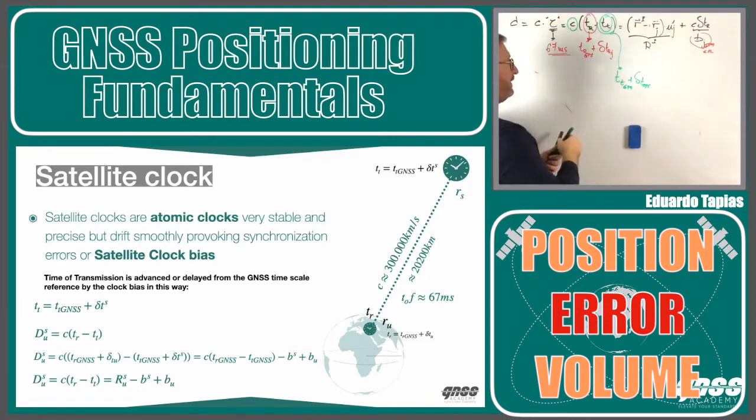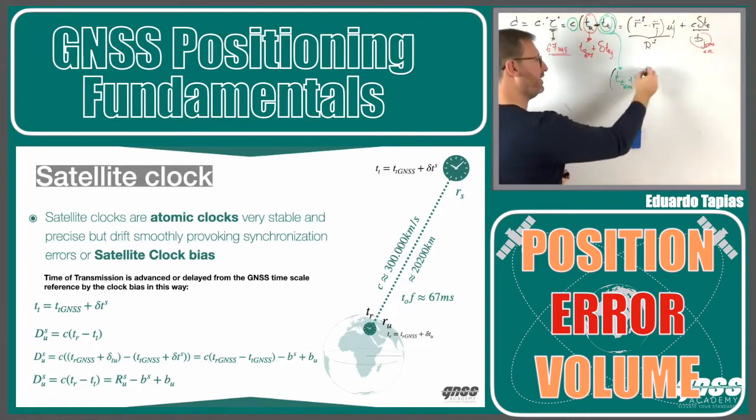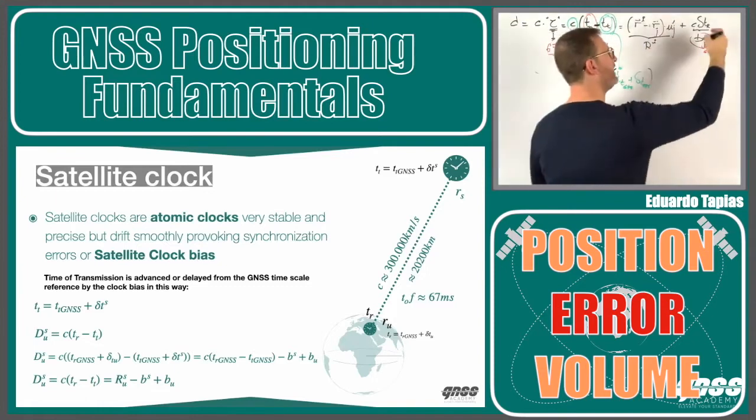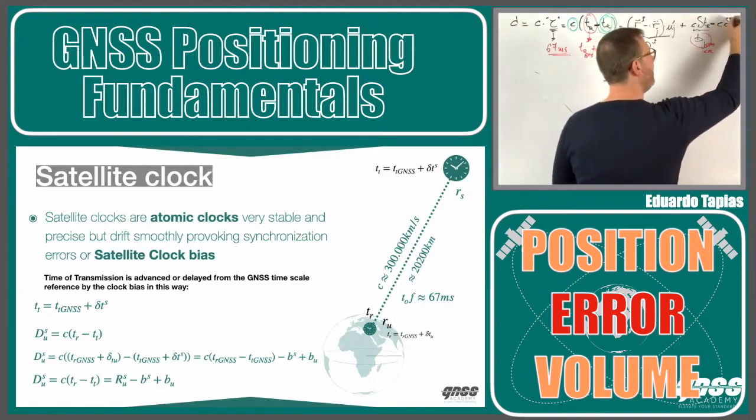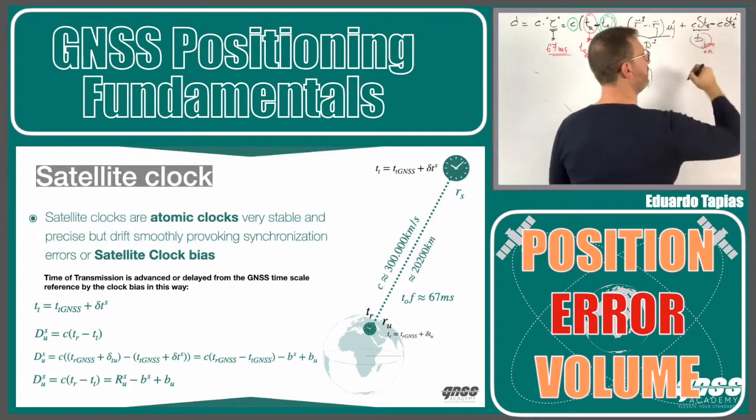This is negative here. This is negative here. It means that here will be negative. I have to add here somehow minus c delta t_i satellites at the transmission time.